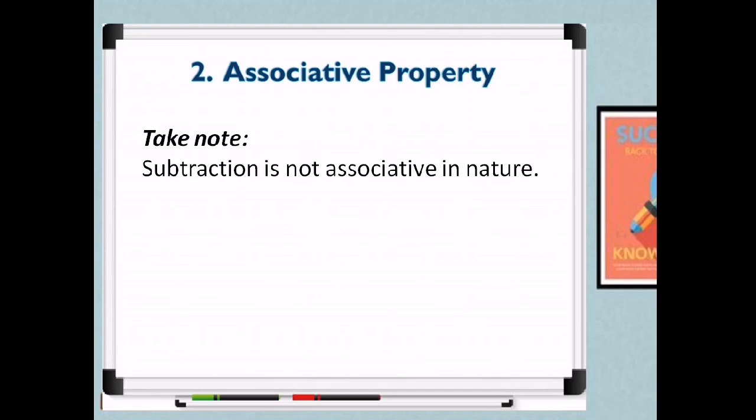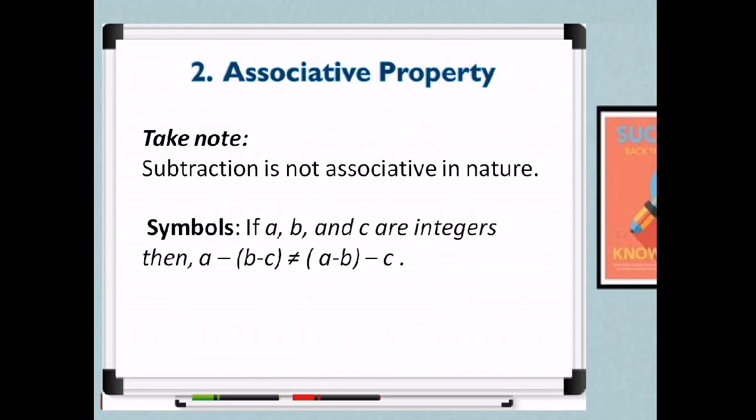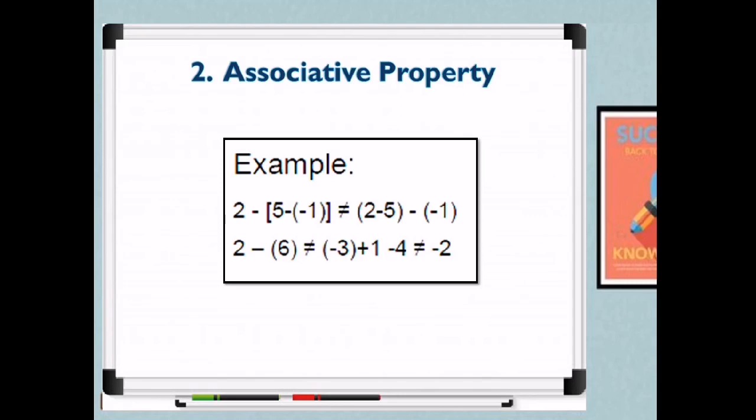Take note: subtraction is not associative in nature. If a, b, and c are integers, then a minus the quantity of b minus c is not equal to the quantity a minus b minus c. This is probably because it might change the sign, unlike in addition. The rules of subtracting integers are different, so the associative property is not applicable in subtraction.